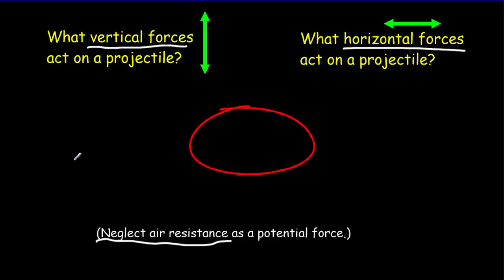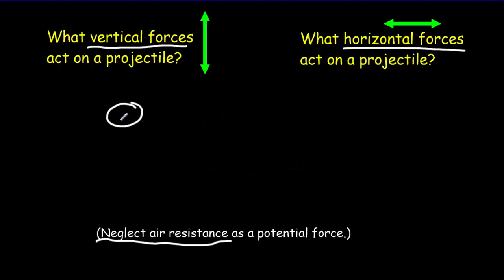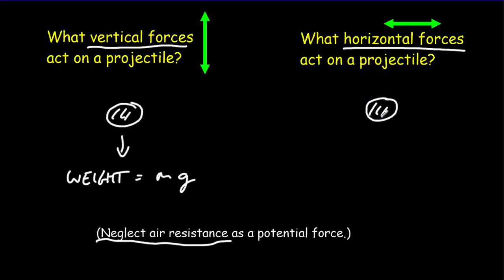So pause the video and think about the forces acting. Hopefully you said the vertical forces — there's only one vertical force acting downwards. That's equal to the weight or the gravitational force, so you multiply the mass times g. Now for the horizontal forces, remember a force can only be created by a field or contact. If there's no air resistance, there's no contact with our projectile, which means there are no horizontal forces.